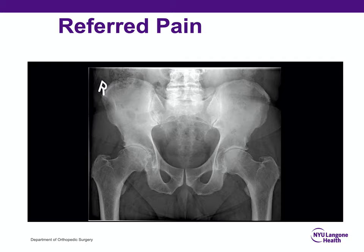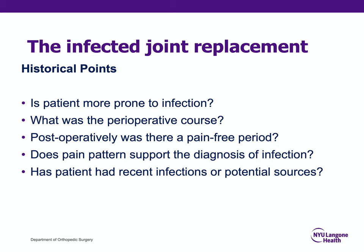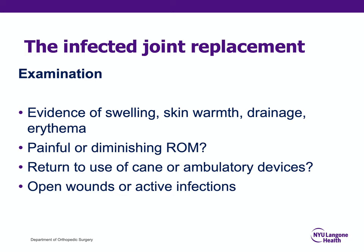Deep infection is a significant problem in total joint arthroplasty and is very likely to appear on the board examination. Look for historical points that point towards infection: are there factors indicating the patient is more prone to infection? Was there a pain-free interval or has the patient had severe pain since surgery, which suggests infection? The pain pattern in infection is generally more diffuse, as opposed to a focal or intermittent pinching type pain. On exam, look for significant swelling, skin warmth, drainage, erythema, and painful or diminished range of motion.